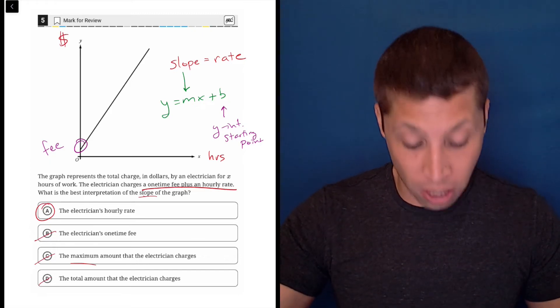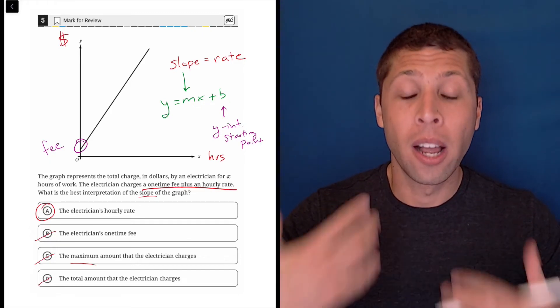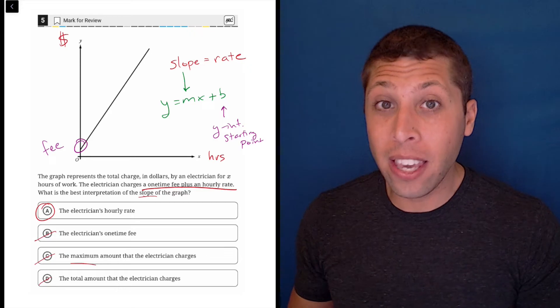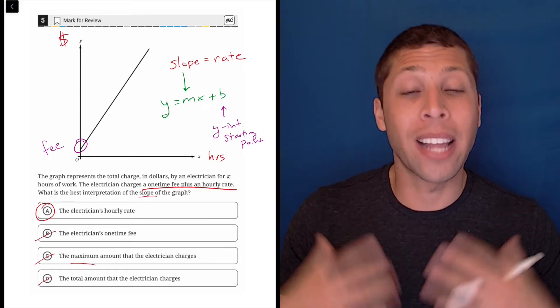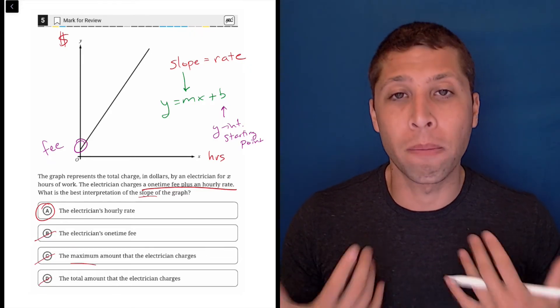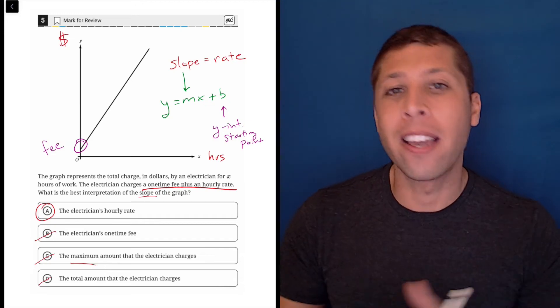Because no matter how many hours you hire this electrician for, you're going to have to pay that fee. So that's kind of like a starting value. And that's also a very common idea that you should memorize. One time fee is a Y intercept.